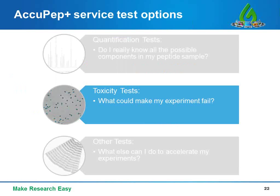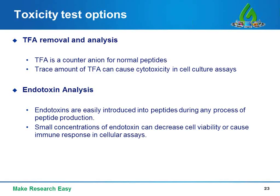Moving on to the toxicity test part: what could make my experiment fail? We explore two main components in custom peptide samples that may be toxic for your bioassay. In the toxicity test, we examine two potentially toxic components — TFA and endotoxin — and provide two test options: TFA removal and analysis, and endotoxin analysis. It has been reported that trace amounts of TFA can cause cytotoxicity in cell culture assays, while endotoxins are usually introduced during peptide production since clean rooms are not available in any production process.